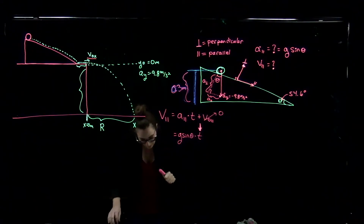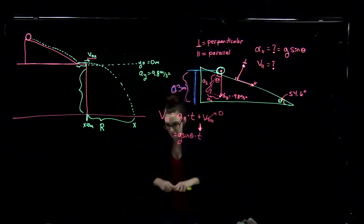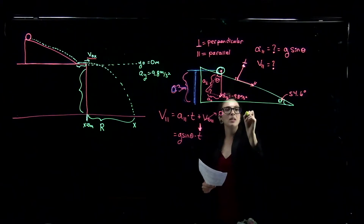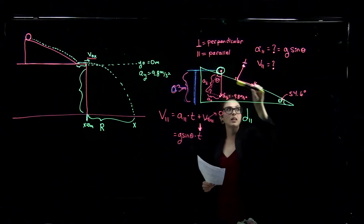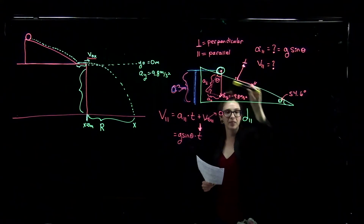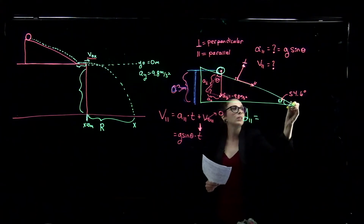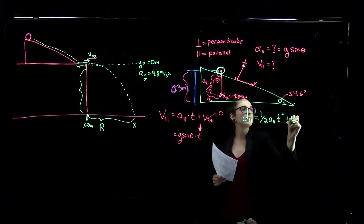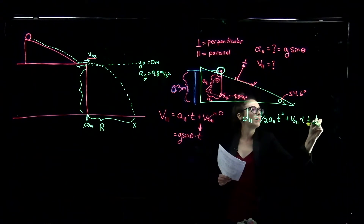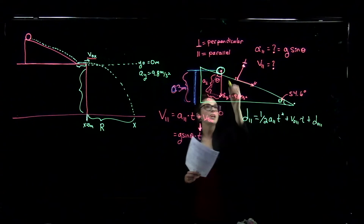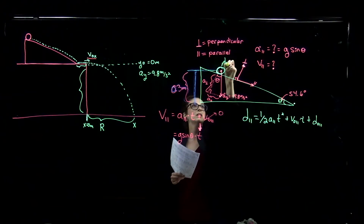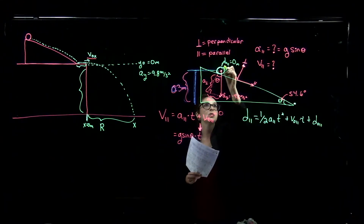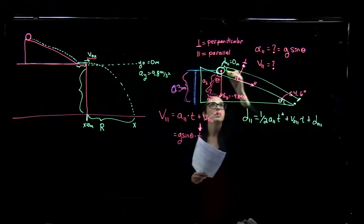To find the time, we use the position equation. Writing it in terms of the parallel direction: D_parallel equals one-half A_parallel times T squared, plus the initial velocity parallel times time, plus the initial position parallel. We say the initial position parallel is 0 meters, and D_parallel is the total distance the ball travels along the ramp.